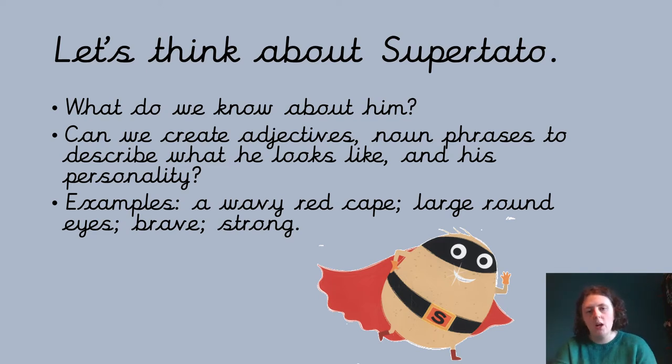So some examples I thought of for what he looks like were that he has a wavy red cape, that's a noun phrase, large round eyes because I don't like the word big, and then for his personality I just thought of some adjectives like brave and strong, because we saw he was brave to try and defeat the evil pea and we saw he was strong when he saved all the other vegetables.